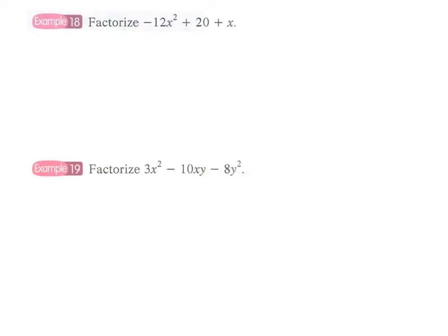Okay, example 18: factorize -12x² + 20 + x. Remember, we have to rearrange the terms such that we have a descending order of x in the expression.